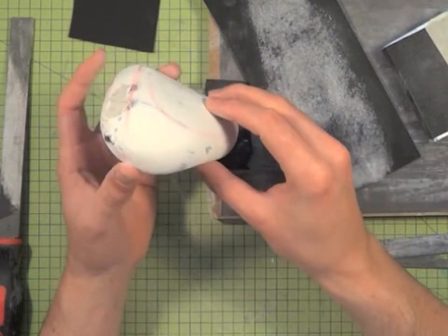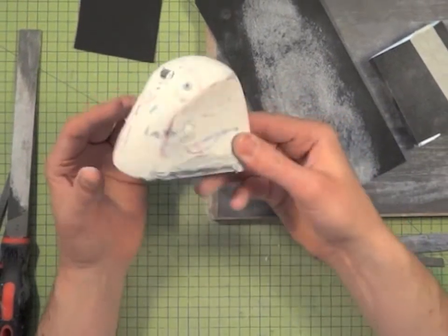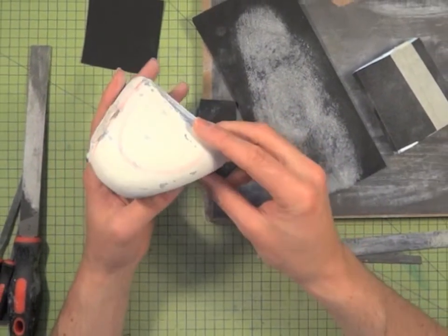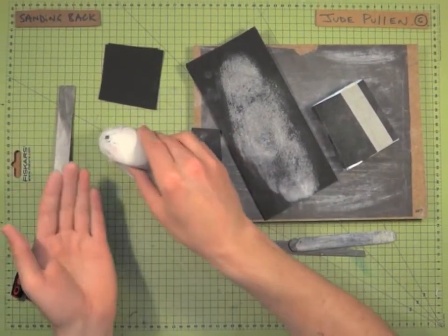You can see where all the lines are converging to. You can take it to as much detail or as little detail as you like, but it's quite helpful to actually have these bleeding through so you can see what you're doing.